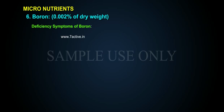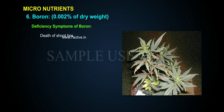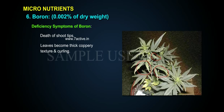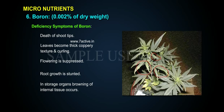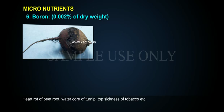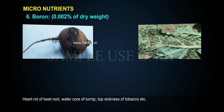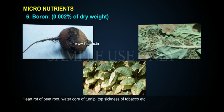Deficiency symptoms of boron include death of shoot tips, leaves becoming thick with a coppery texture and curling, suppression of flowering, and stunted root growth. In storage organs, browning of internal tissue occurs, leading to conditions such as heart rot of beetroot, water core of turnip, and top sickness of tobacco.